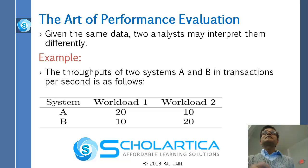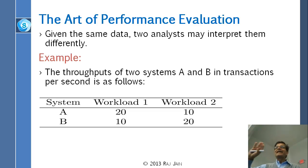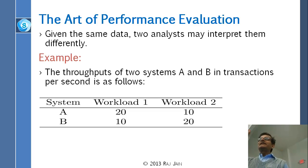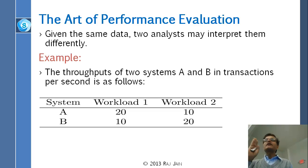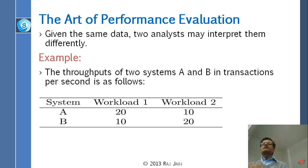If I work for company A and want to show my system is better, one thing I can do is forget workload two - just hide it and say workload one is the most common and most important. Most people, when you read their work, first justify the workload: they say small jobs are most common and we are optimizing performance for small jobs. But if your system doesn't work for small jobs, you say no, big jobs are the most important, and here is the performance for big jobs.